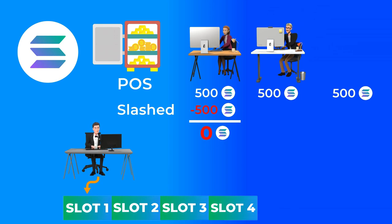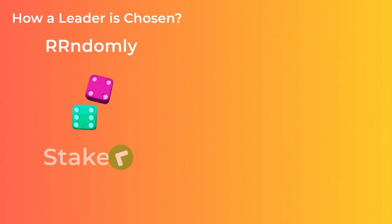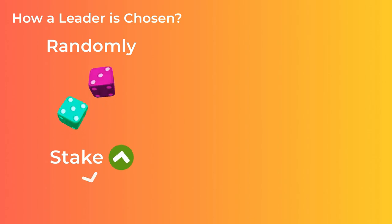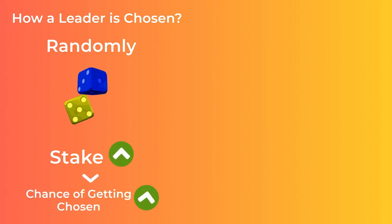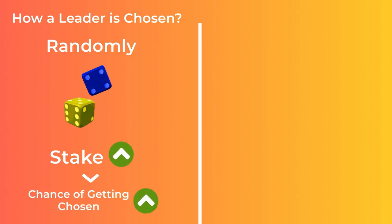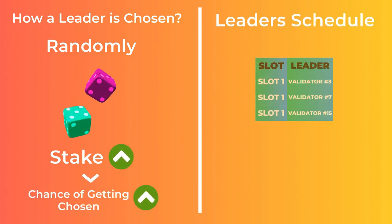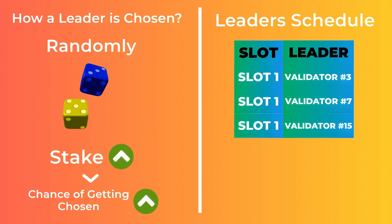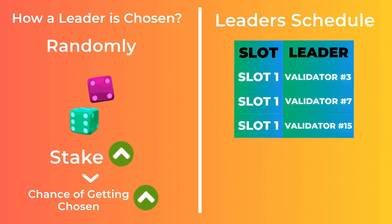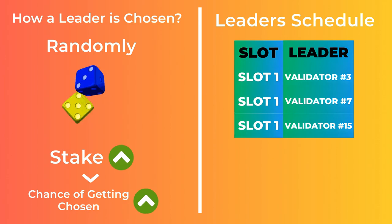In Solana, this chosen validator is called the leader and it is chosen randomly, but his chance of getting chosen increases according to the amount of tokens he staked. There is a leader schedule anyone can see for the next leaders for the next time slots, so each leader knows his turn in advance.